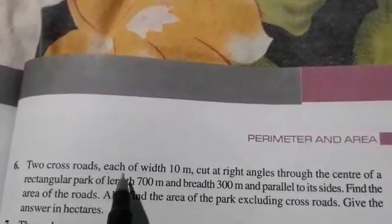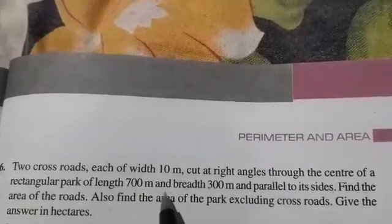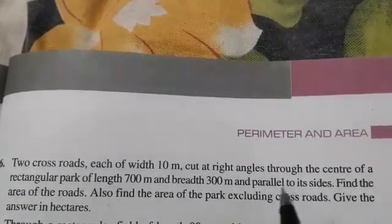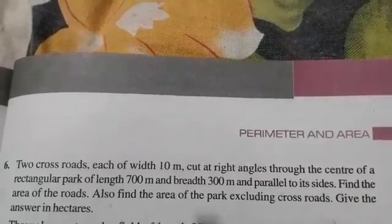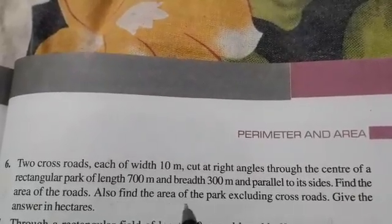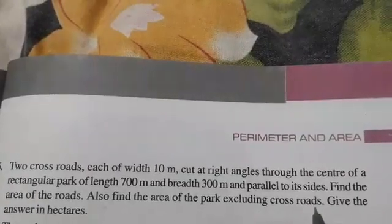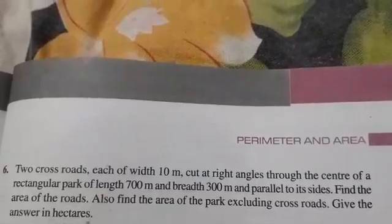Two crossroads each of width 10 meter cut at right angles through the center of a rectangular park of length 700 meter and breadth 300 meter and parallel to its sides. Find the area of roads, also find the area of the park excluding crossroads. Give the answer in hectares.